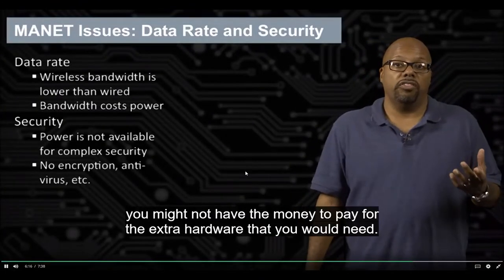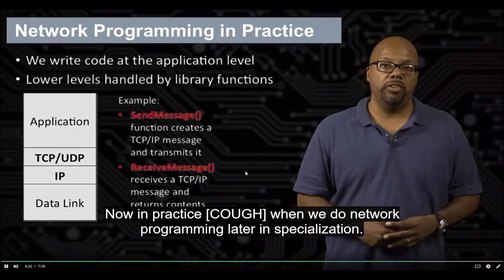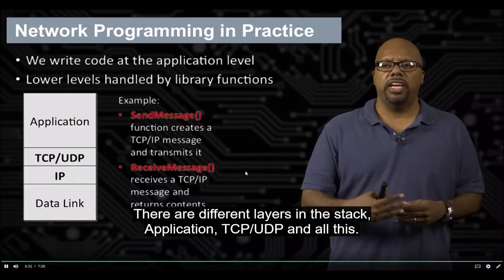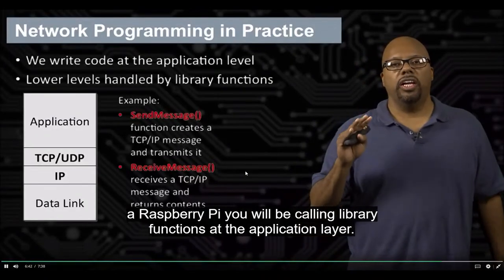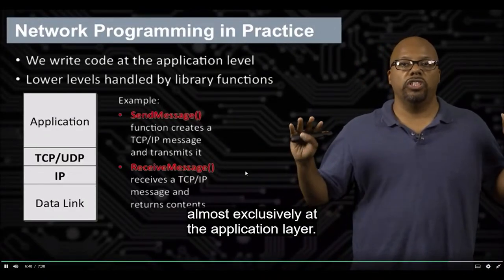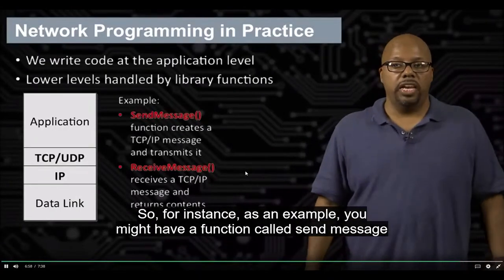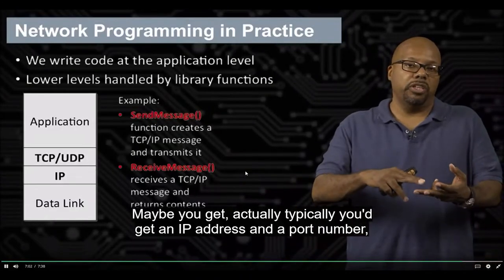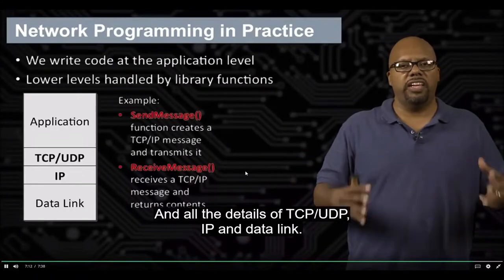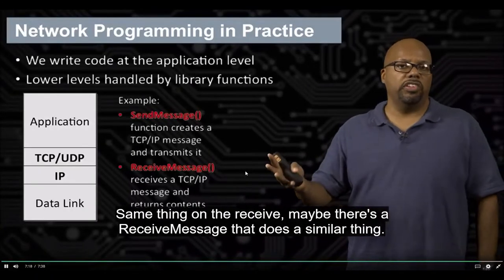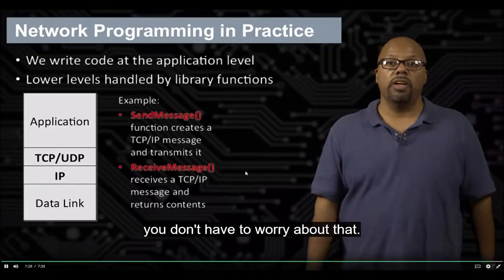In practice, when we do network programming later in this specialization, there are levels in the stack — different layers — but we don't have to touch those directly in our coding. When we use an Arduino or Raspberry Pi, you'll be calling library functions at the application layer. So your code will be almost exclusively at the application layer. For instance, you might have a function called sendMessage — an application layer function that sends a message to an IP address and port number. All the details of TCP, UDP, IP, and data link are handled by the protocol stack.